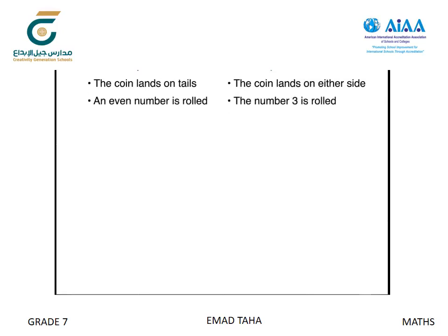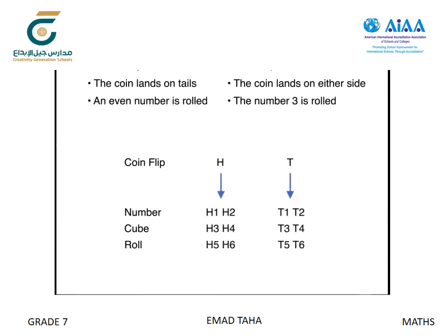Listen and look for students who represent the sample space of the coin flip and number cube roll by devising a systematic method, such as an organized list, a table, or tree diagram. The coin flip has two outcomes, either heads or tails. In each case, the number cube has six possible rolls, so the sample space is made of twelve equally likely outcomes. For Option 1, three of the twelve outcomes include tails and an even number, so the probability of success is 3/12, or one-fourth.